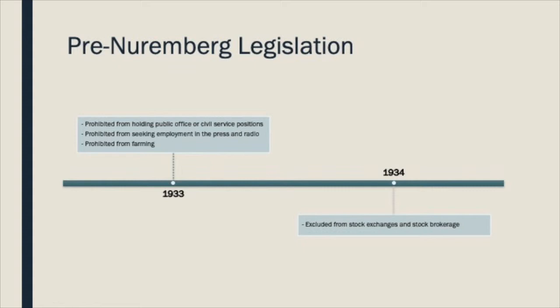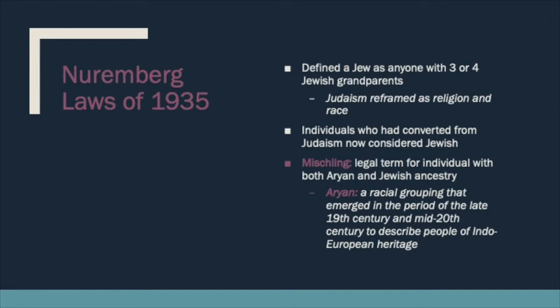These laws aren't huge and sweeping — it is simply identifying and beginning to withhold certain rights from the Jewish community. In 1935, this is the game changer for anti-Semitic legislation: the Nuremberg Laws are passed. What is interesting about this set of laws is that for the first time, the Third Reich is defining who is considered a Jew. The previous laws passed in 1933 and 1934 only mention that Jews cannot hold certain positions, but don't identify or define who may be considered Jewish.